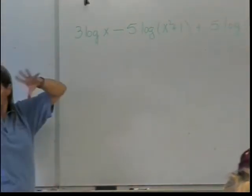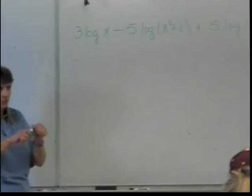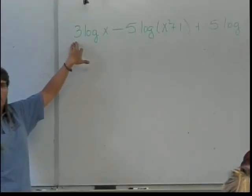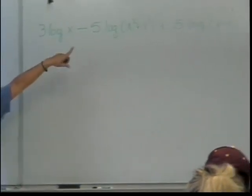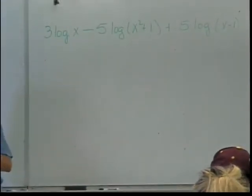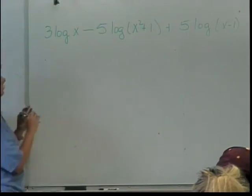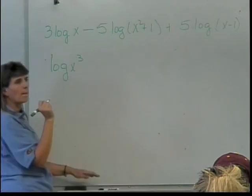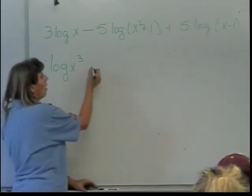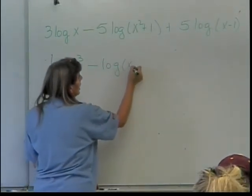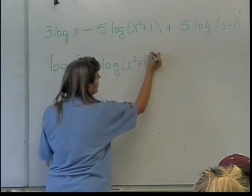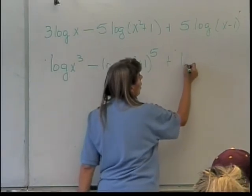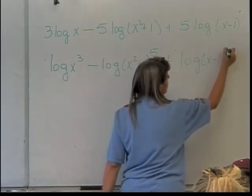So here's why it's important to realize what the logarithms are being taken of. This is why I emphasize this is only the logarithm of x. That 5 is multiplying this next logarithm so that 5 will be able to go up and become a power. It's not uncommon for people to make that mistake, and that's why I emphasized you have to have parentheses. What am I going to get when I take care of all these numbers that are coefficients and make them into powers? What will I have? log of x to the third minus log of x squared plus 1 to the fifth plus log of x minus 1 to the fifth.